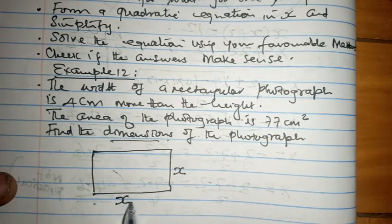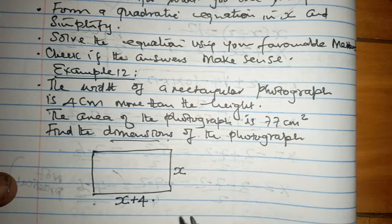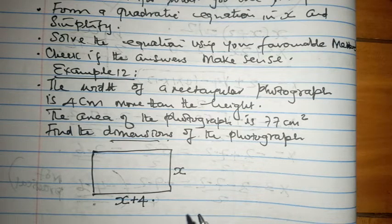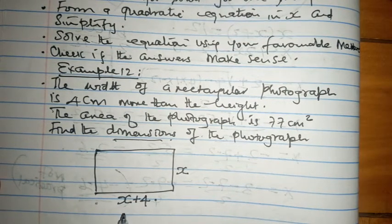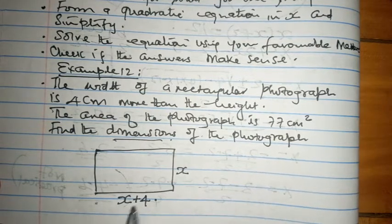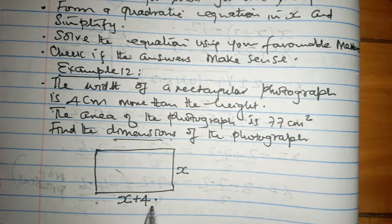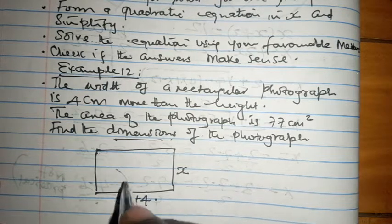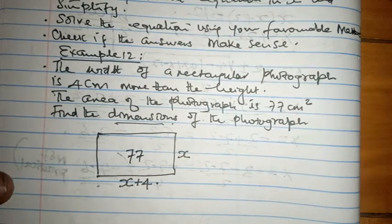And of course the width is four centimeters more than the height. That means x added four, or rather x plus four. Because we are talking about four more than, not four times. If we were talking about four times the height, then we would have four x. But now, four more than. So it is whatever the height is, plus four.